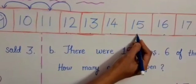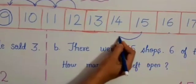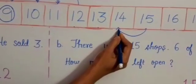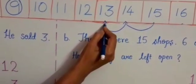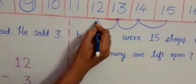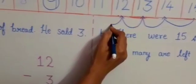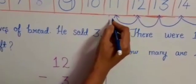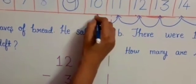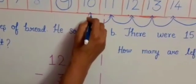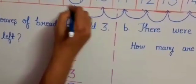Start from 15. 15 to 14, 1 step. 14 to 13, 2 steps. 13 to 12, 3 steps. 12 to 11, 4 steps. 11 to 10, 5 steps. 10 to 9, 6 steps.